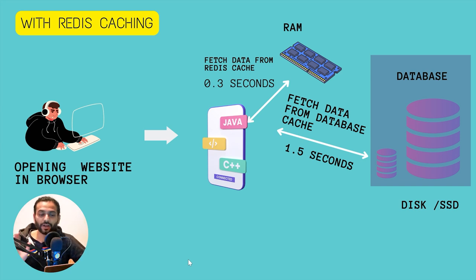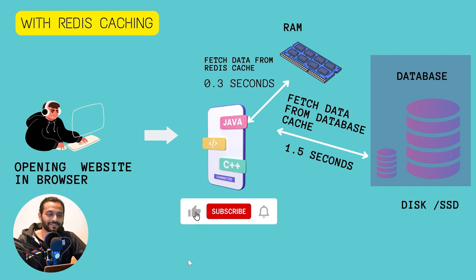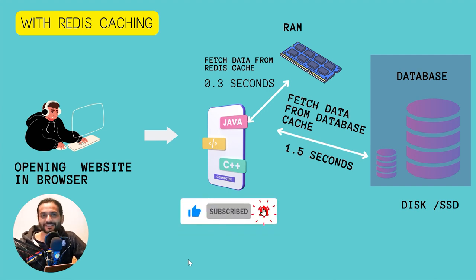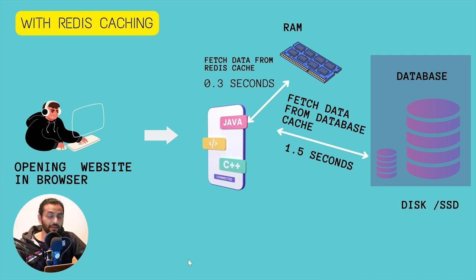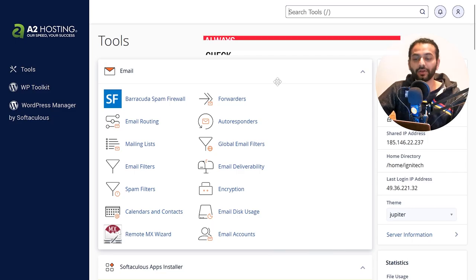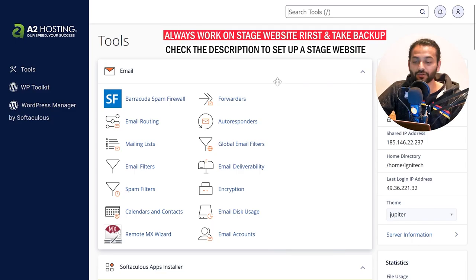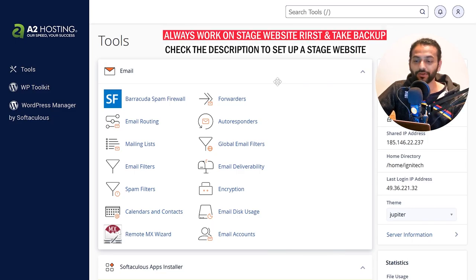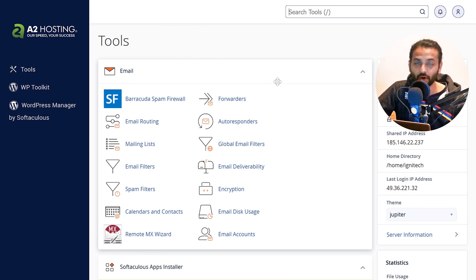So now I hope you understand what Redis cache is and how it works. To enable Redis cache on your website, you need to go to your cPanel or any other panel provided by your host and search for the PHP configuration.